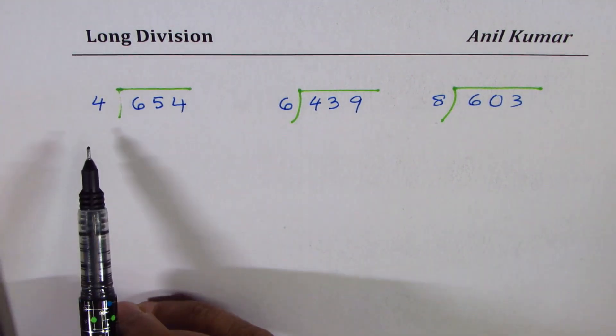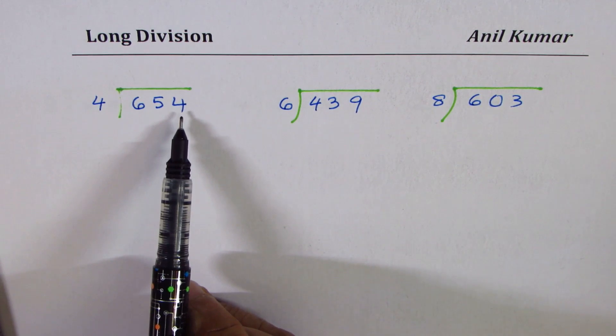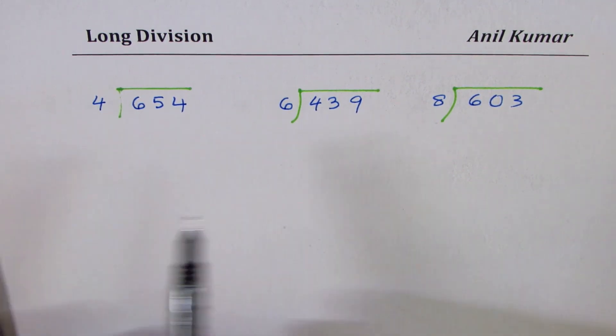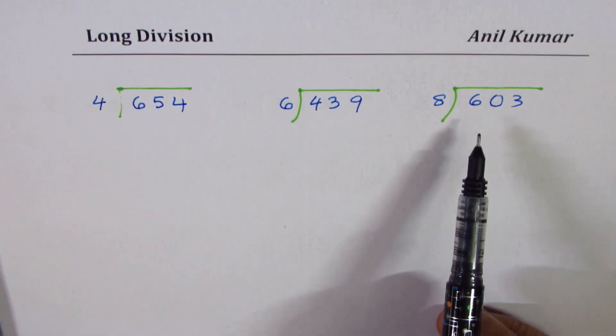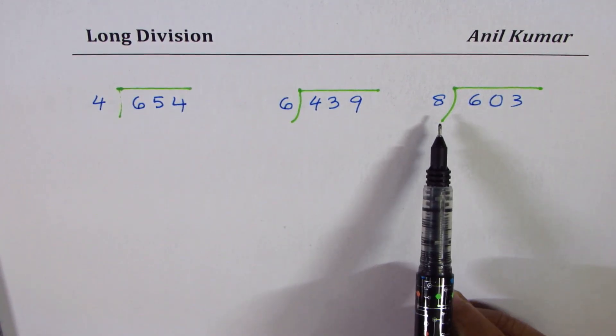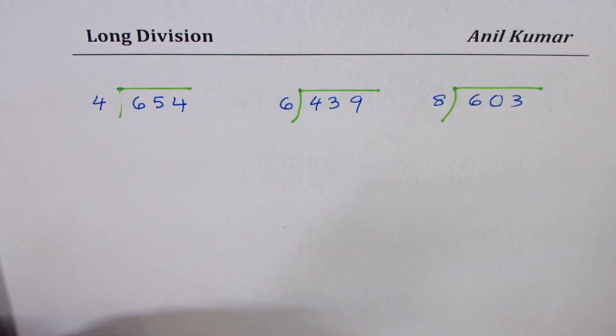The first one here is 654 divided by 4. Then we'll divide 439 by 6 and then do 603 divided by 8. You can always pause the video, solve these questions, and then look into my suggestions.